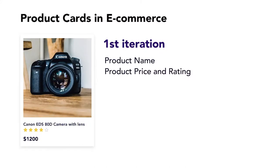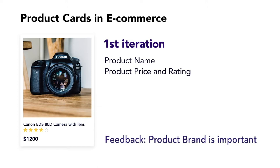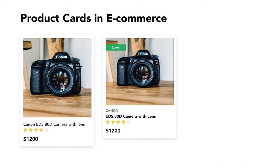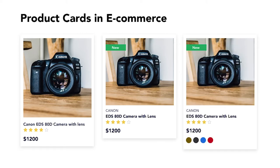This is an example of a product card in e-commerce. The first design shows a Canon camera with the price, name, and rating of the product. After the first iteration, there was feedback from the PM that the camera brand is extremely important and plays a major role in selling cameras across the e-commerce website. So the camera brand was placed on top of the product name, and then the product price was mentioned. With another round of iterations, we decided it would be beneficial for users to also see the different color variants of the camera as part of the product card.